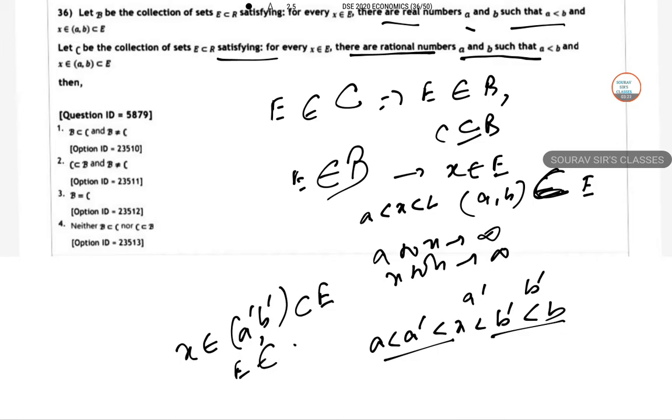So we have this x belongs to (a', b') which is a subset of E. So E belongs to C and so B is a proper subset of C. Hence the option number C is correct.